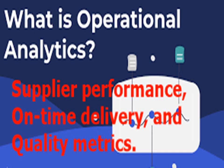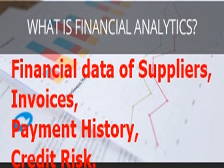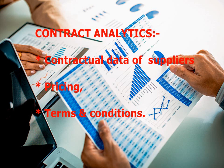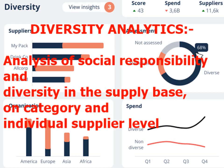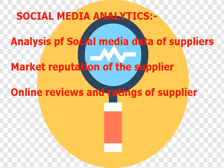Operational Analytics focuses on operational data of the supply chain, such as supplier performance, on-time delivery, and quality metrics. Financial Analytics focuses on suppliers' financial data such as invoices, payment history, and credit risk. Contract Analytics focuses on contractual data such as pricing, terms, and conditions. Diversity Analytics covers the analysis of social responsibility and diversity in the supply base at category and individual supplier level. Social Media Analytics focuses on suppliers' social media data to find market reputation, such as online reviews and ratings.